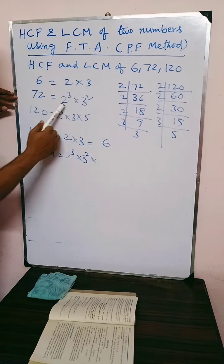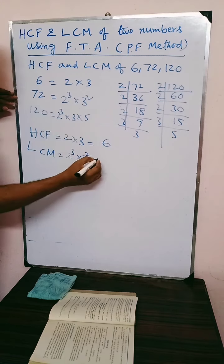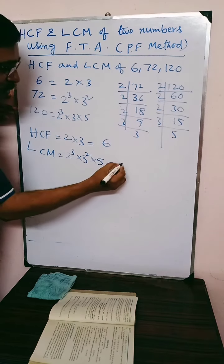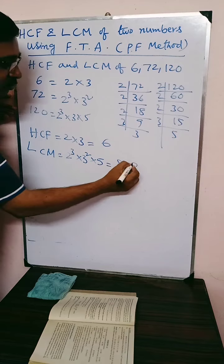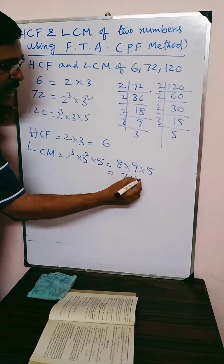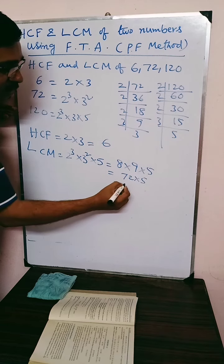Now here 5 is not there, here 5 is not there, but it is here. So that factor also we have to consider. So 2 cubed is 8 multiplied by 3 squared, 9, multiplied by 5. So 72 multiplied by 5. That is 360.